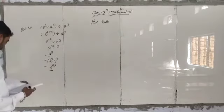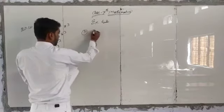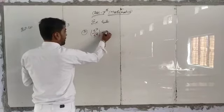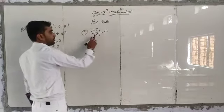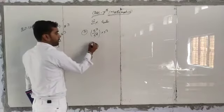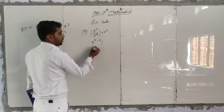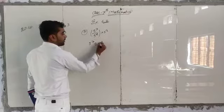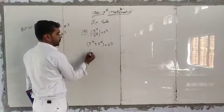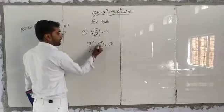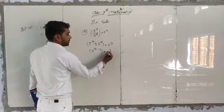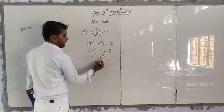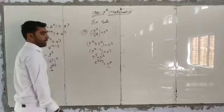Question number 3, third part: 5k power 7 upon 5k power 2, and 5k power 3. So 5k power 7 divided by 5k power 2 means 5k power 7 minus 2, which gives 5k power 5. Then 5k power 5 into 5k power 3, same base, so 5k power 8 is our answer.